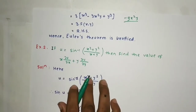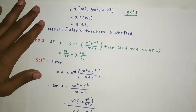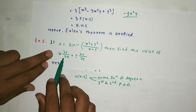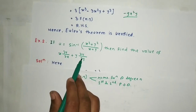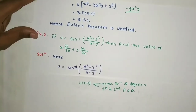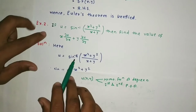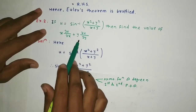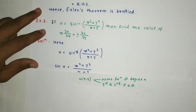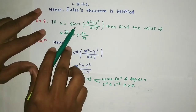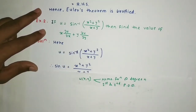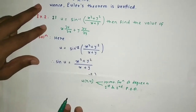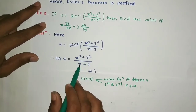Now example number 2. u = sin⁻¹((x² + y²)/(x + y)). Find the value of x · ∂u/∂x + y · ∂u/∂y. For this type of problem, since we have sin inverse, we multiply throughout by sin. So sin u = (x² + y²)/(x + y).